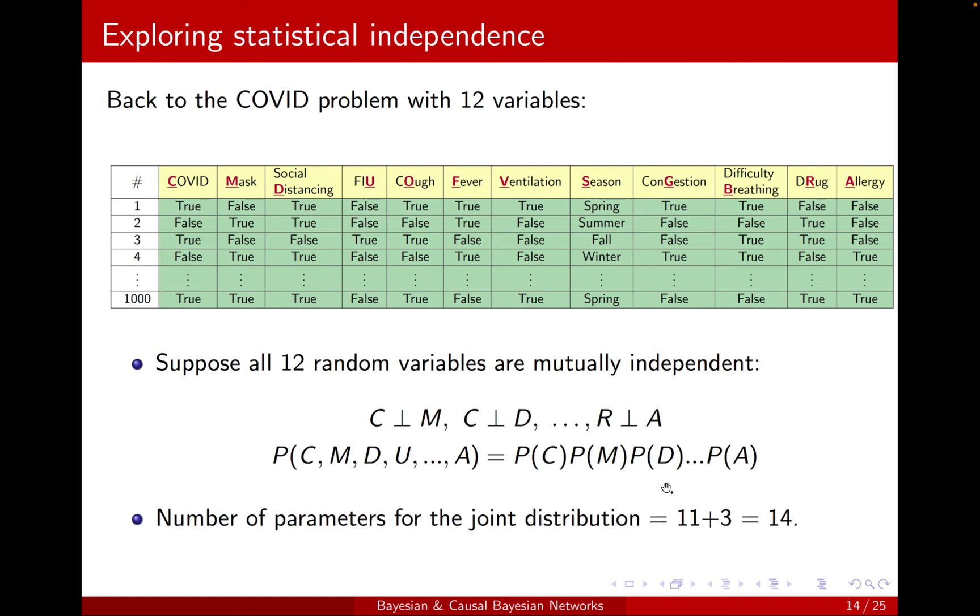Now, how many variables is this? The number of parameters for this joint probability distribution is one, right? This is a binary variable. We only need one parameter for it. Plus one, plus one, all the way. Everything will be one except for season, which is three, because it's four minus one. So it will be 11 plus three, 14. What was the previous one? It was eight thousands. That is a dramatic reduction in the number of parameters. And I hope this can show you how powerful can be identifying independence relationships between the variables.